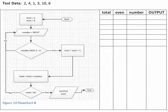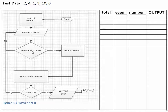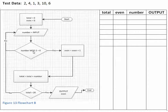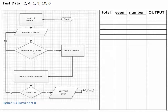Now we're going to work through this flowchart. Before we begin, I'll point out the use of the mod operator. Mod is division that returns the remainder. So 5 mod 2 returns 1, because 2 goes into 5 twice with a remainder of 1. And 4 mod 2 returns 0 — 2 goes into 4 twice with no remainder.